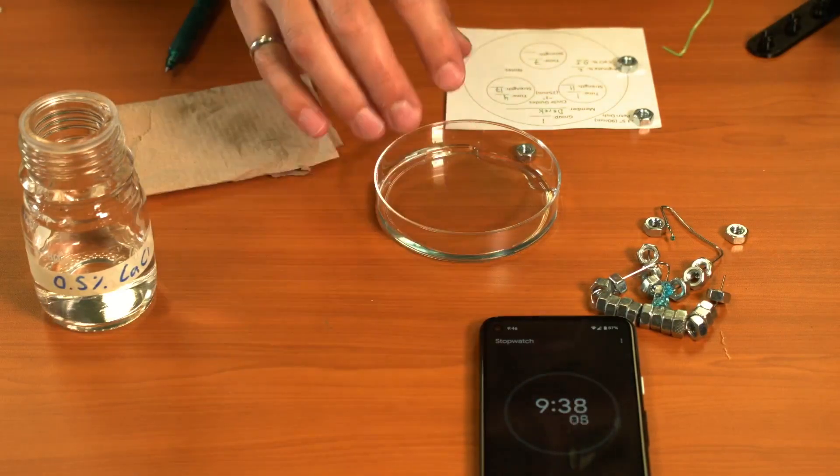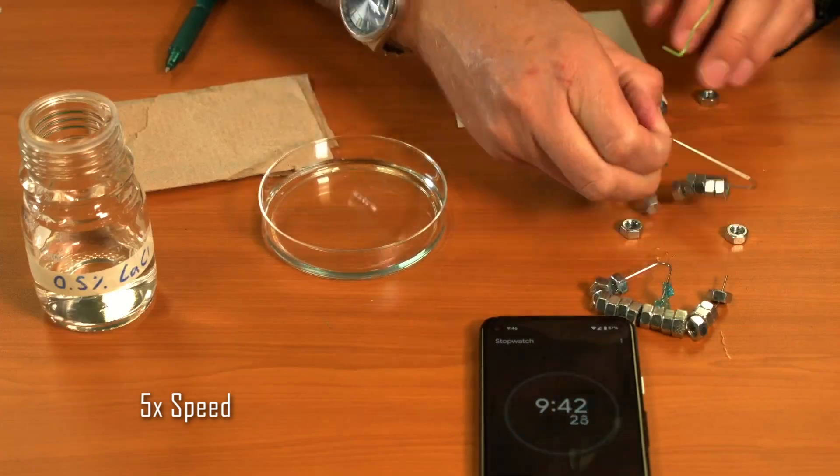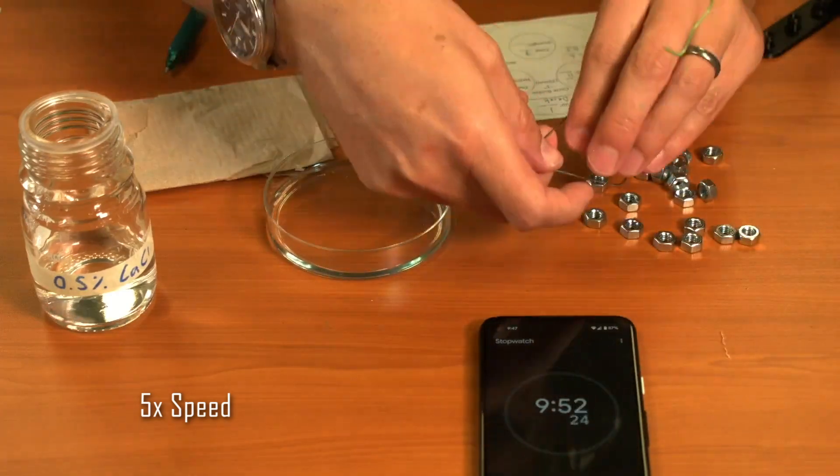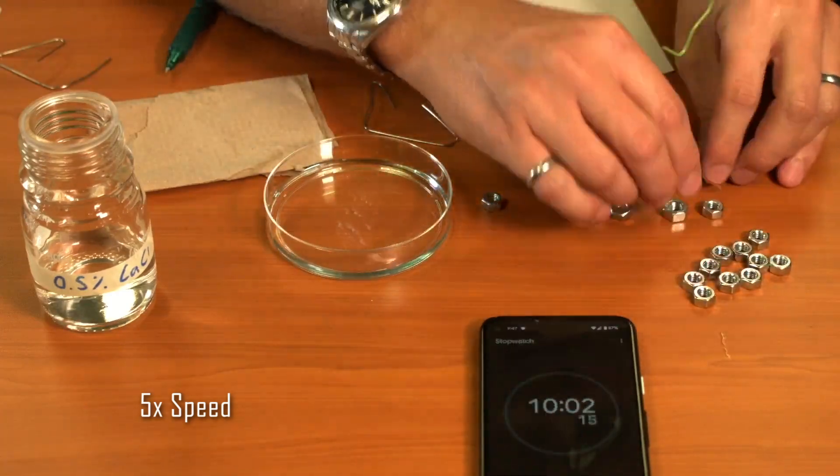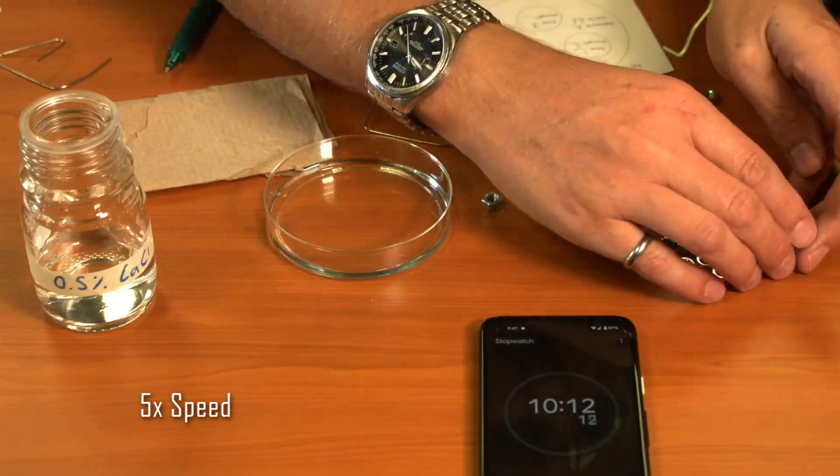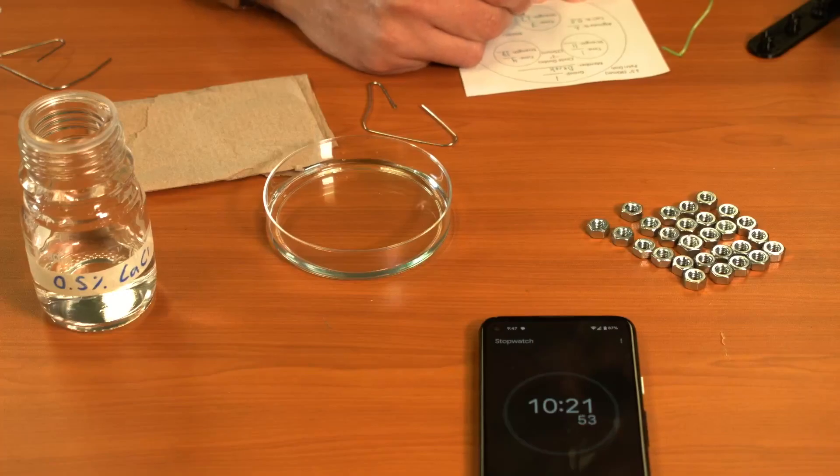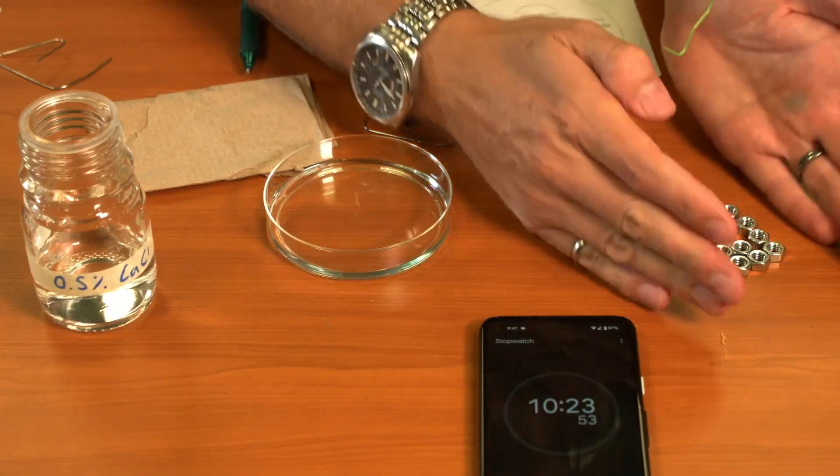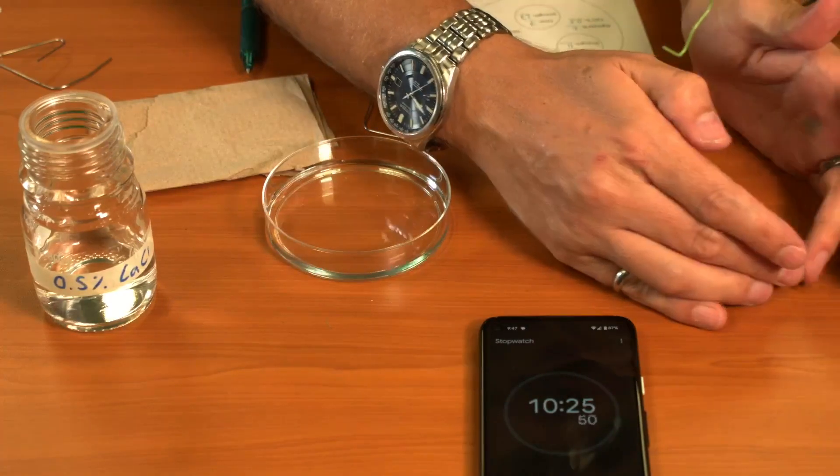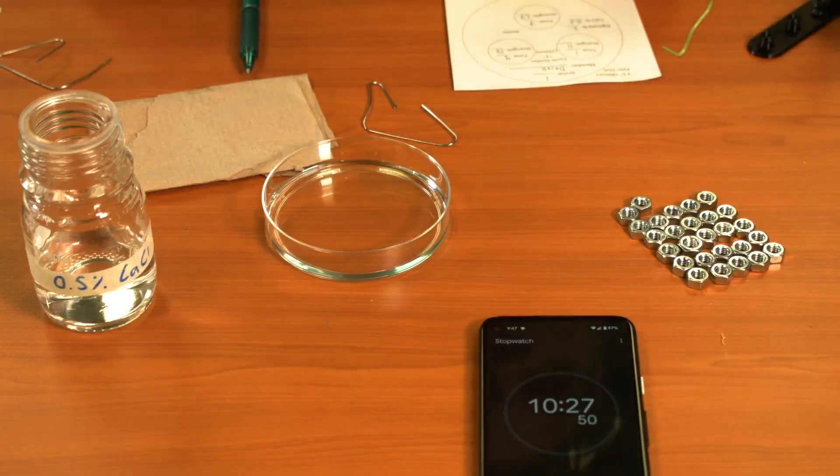Alright, let's count those out. 27. So we can see that from this one we were obviously able to hold more weight as we let the rings cure longer in the calcium chloride. That's because the longer it sits, the more of the sodium alginate is able to be cross-linked.